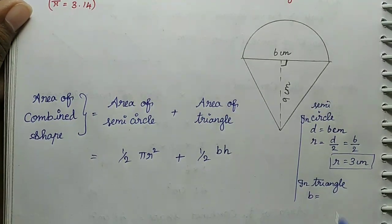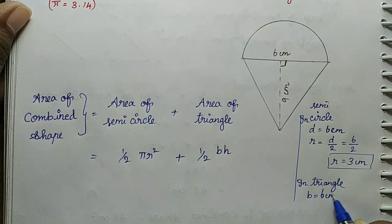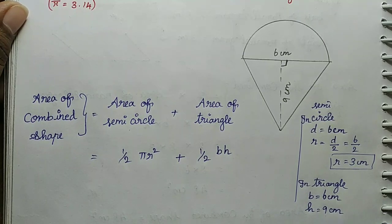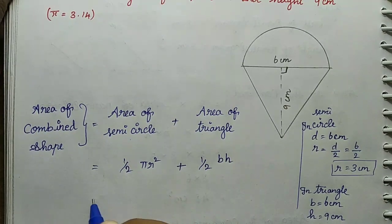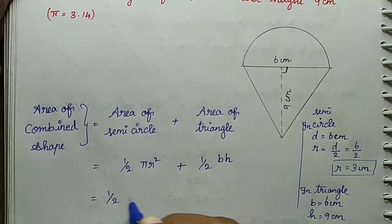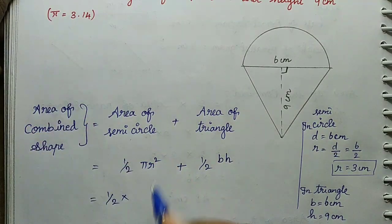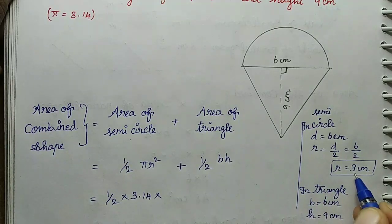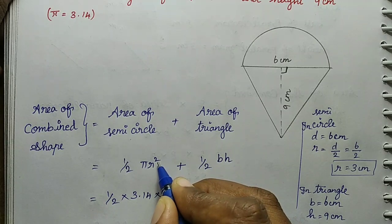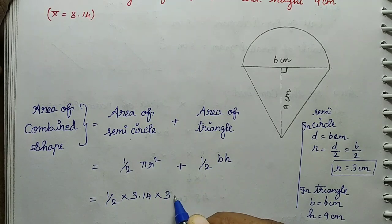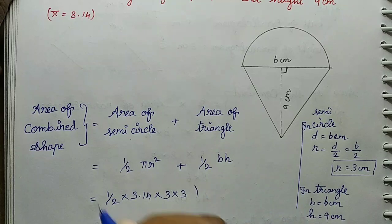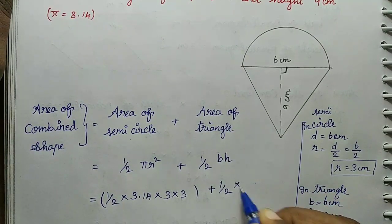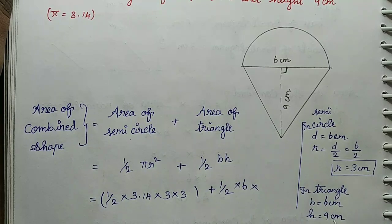That equals 1/2 × π. The pi value in this question is 3.14. R we found is 3, so R squared means 3 × 3. Plus 1/2 × base which is 6 × height which is 9.